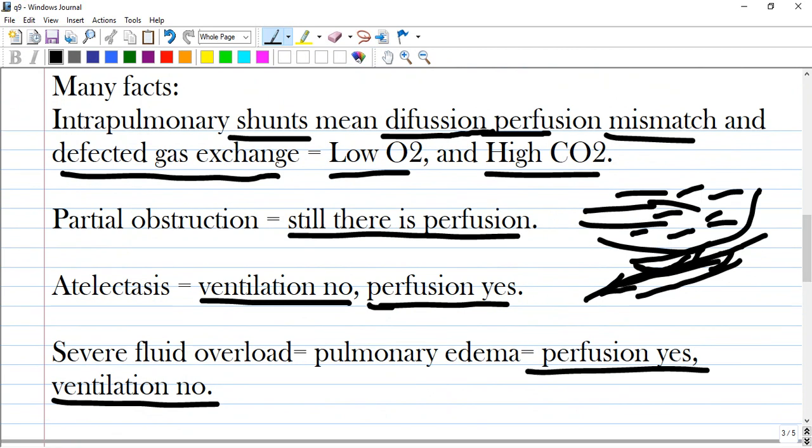Let's read many facts and you can write them down. They are very important, high yield. So, intrapulmonary shunt means diffusion-perfusion mismatch or both of them and defected gas exchange. So, you will see low oxygen and high carbon dioxide on acid-base equilibrium.